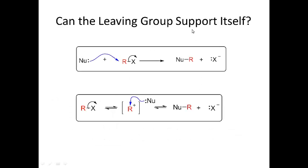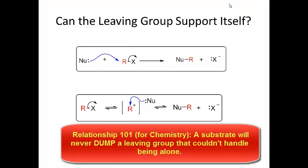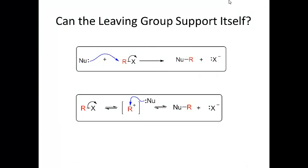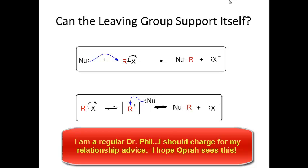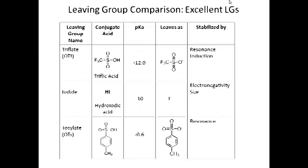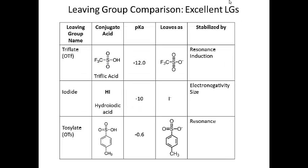The key question to ask with respect to leaving group ability is: when the leaving group leaves, can it support itself? If the answer is yes, it's going to be a good leaving group. If the answer is no, it's going to be a poor leaving group. By 'support itself,' I mean can that leaving group — through hybridization, size, induction, resonance, or electronegativity — stabilize itself? If it can, it's a good leaving group.